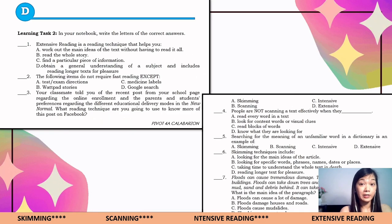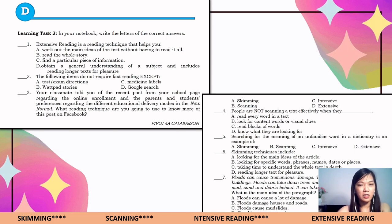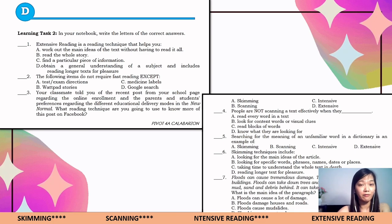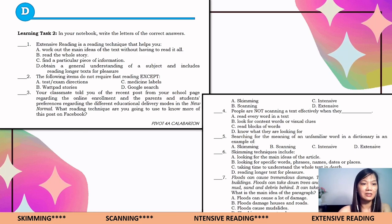For Learning Task Number Two, the instruction is to write the letters of the correct answers in your notebook. You have seven multiple-choice items. Simply read each statement or question and identify the letter that corresponds to the correct answer. You only need to write the letters of your chosen answers.